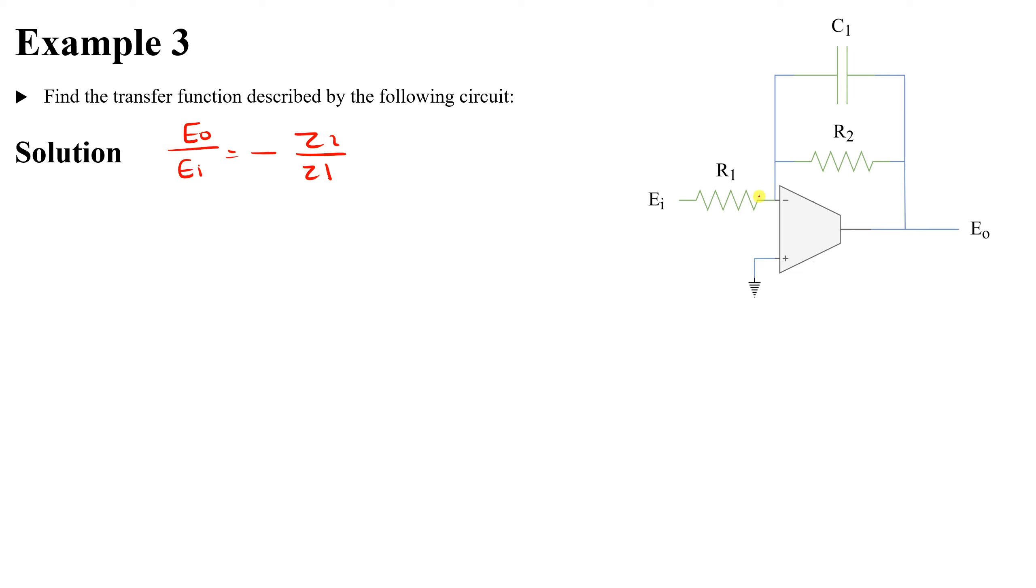Now Z1 here is R1, so Z1 equals R1. And Z2 is the equivalent of all of this. Now C1 is 1 over sC1 in the Laplace domain, right? So Z2 will be the equivalent of these two, which is two parallel components.